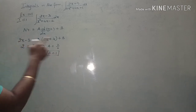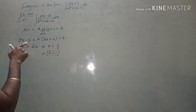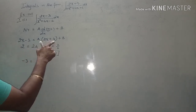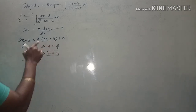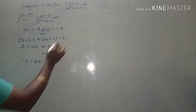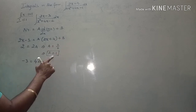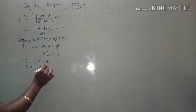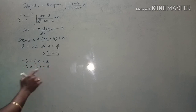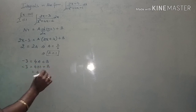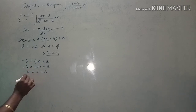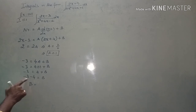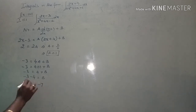Next, equate the constants on both sides. The constant on the left hand side is minus 3. On the right hand side, when you multiply A inside, you get 4A + B. We have A = 1, so substituting: 4(1) + B = minus 3, giving 4 + B = minus 3, so B = minus 3 minus 4 = minus 7.